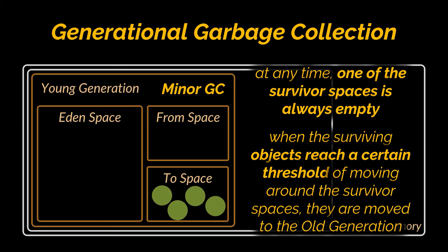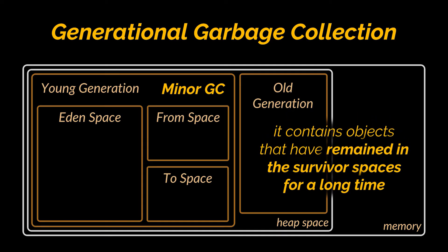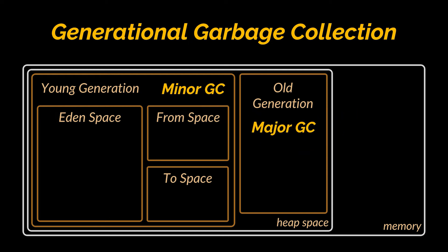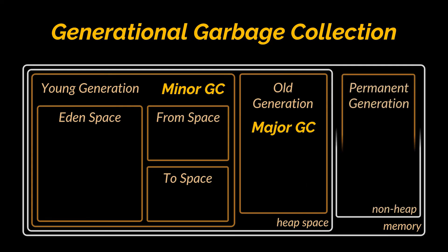When surviving objects reach a certain threshold of moving around the survivor spaces, they are moved to the old generation. The old generation is the second of the three sections. Objects that are alive long enough are eventually moved from the young generation to the old generation; it contains objects that have remained in the survivor spaces for a long time. When objects are garbage collected from the old generation, it is a major garbage collection event.